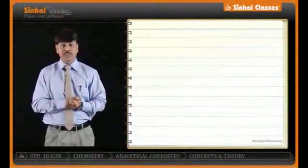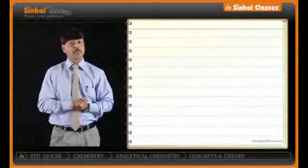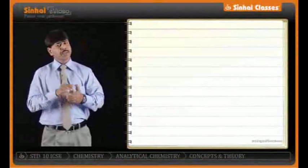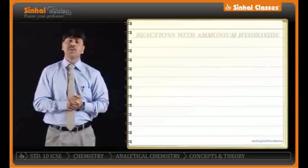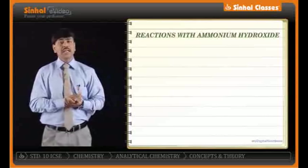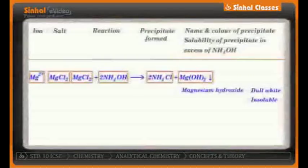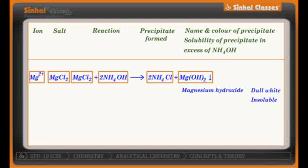We have seen many salts, some soluble and some insoluble in excess of NaOH. Similarly, we can test with ammonium hydroxide. Consider magnesium chloride MgCl2 treated with ammonium hydroxide — also known as liquor ammonia — it will give you ammonium chloride along with Mg(OH)2, that is magnesium hydroxide. It is a precipitate; put an arrow downward. Magnesium hydroxide is a dull white precipitate.